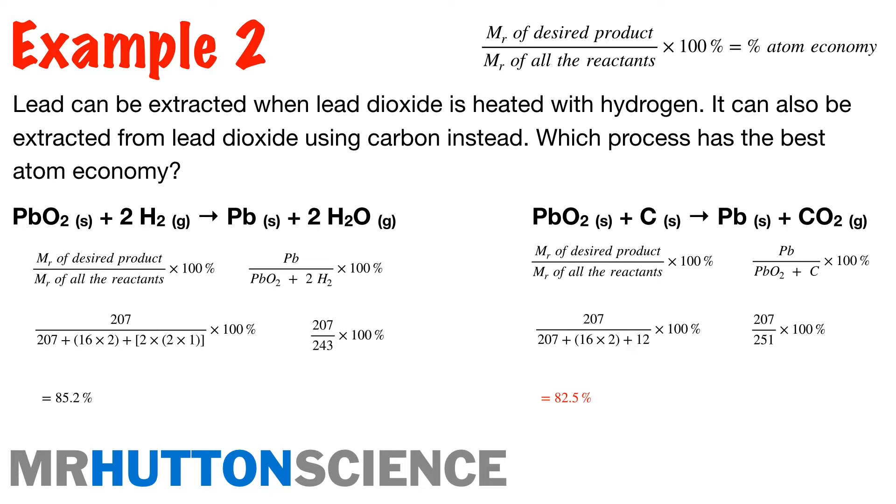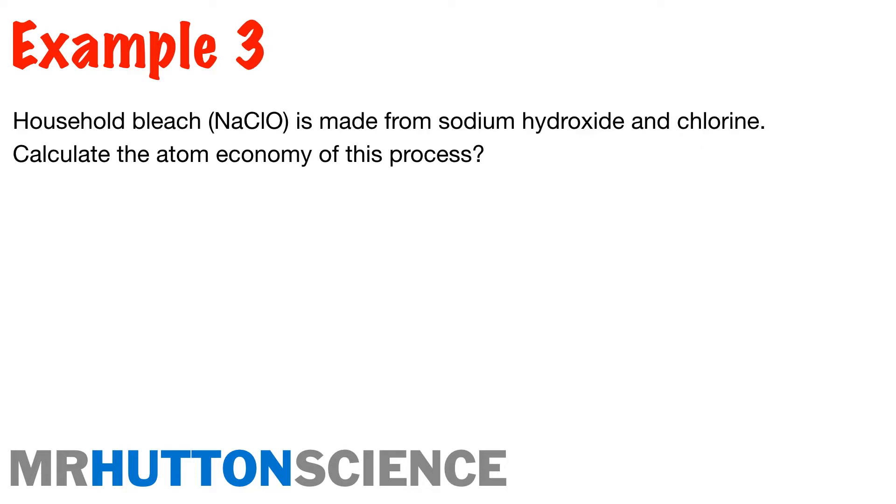Simplified down to 207 over 251 times 100, which has an atom economy of 82.5%. So they're not that different. But in terms of what have we got there? We've got roughly a 3.3% difference. In industry, that over the course of a year and the course of a financial year, that could be a vast sum of money. So this is really, really important for companies to consider before they go and use a particular process.